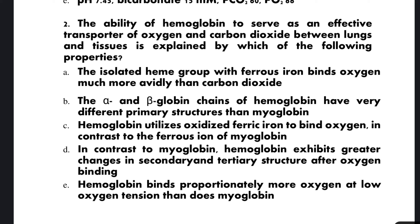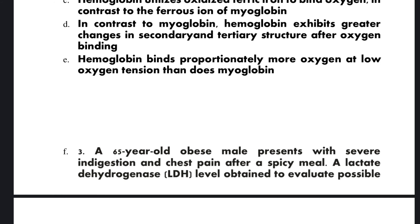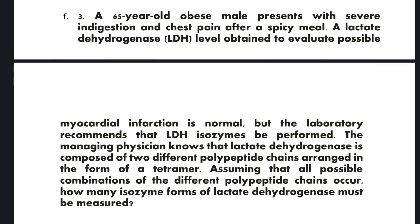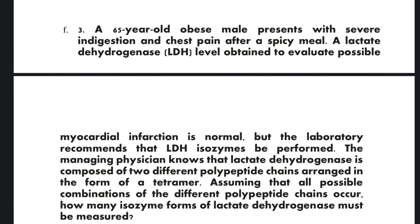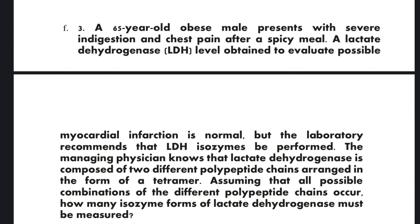The correct option is B: the alpha and beta globin chains of hemoglobin have very different primary structure than myoglobin.